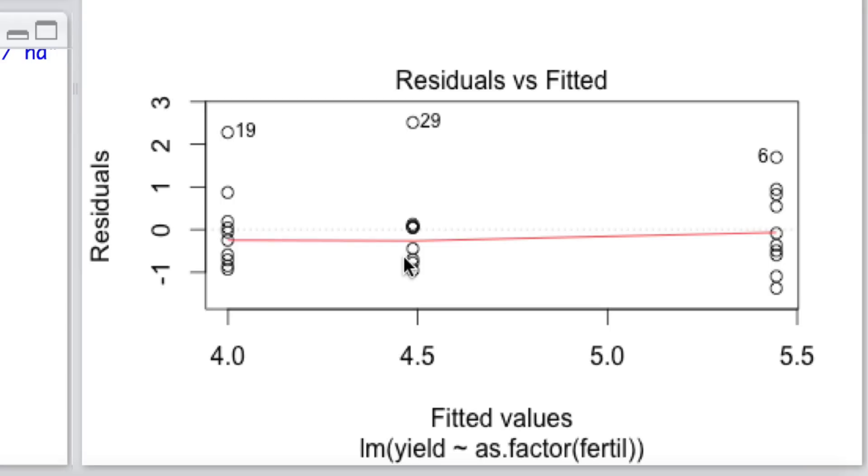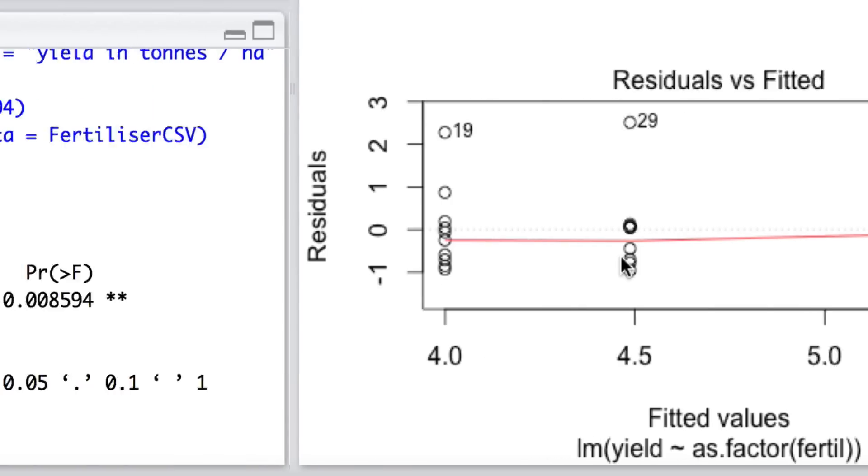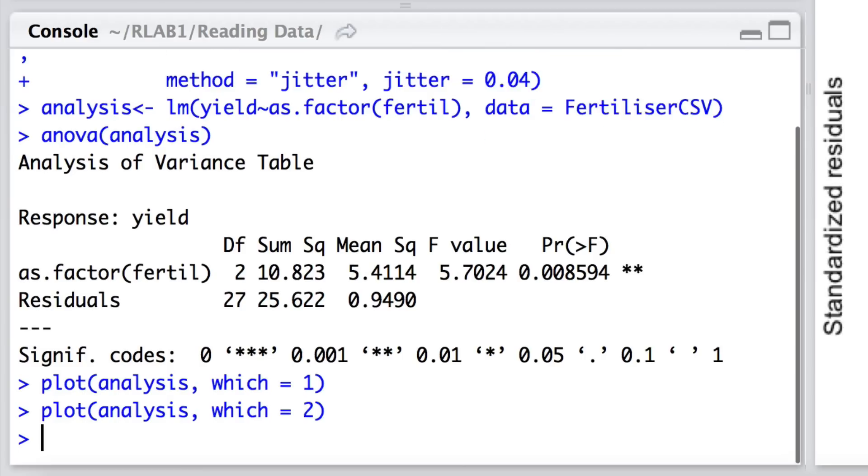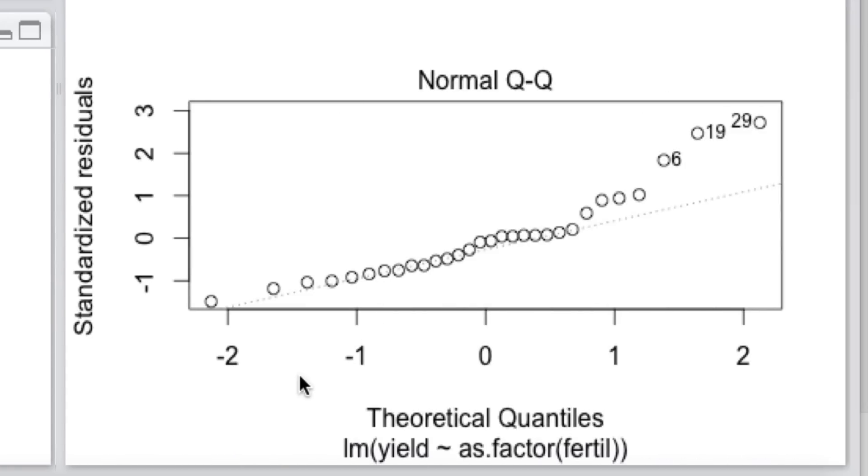Now, that's one assumption. The other assumption, of course, is that we have normality in terms of the overall distribution of the residuals. And here we can use a Q-Q plot to evaluate this particular assumption or actually look at the distribution of the residuals themselves. For a Q-Q plot, which is a quantile-quantile plot, if indeed we have a normal distribution—if we follow the normal Q-Q plot—then it would follow a straight line.